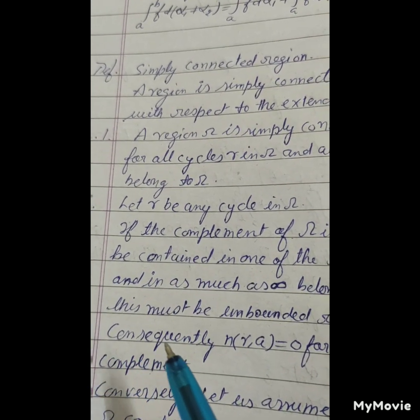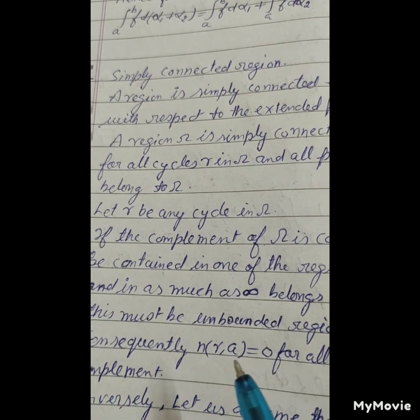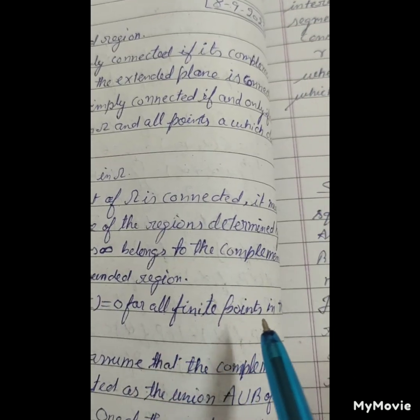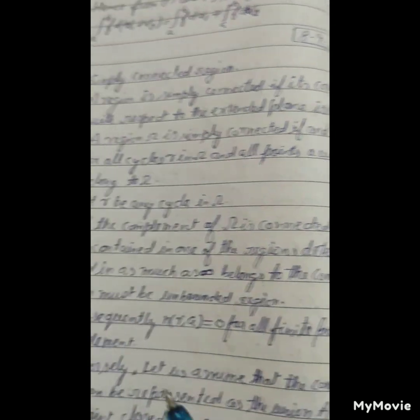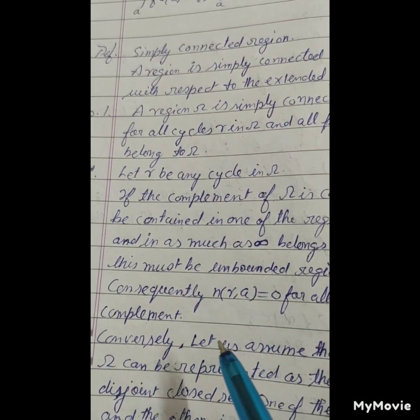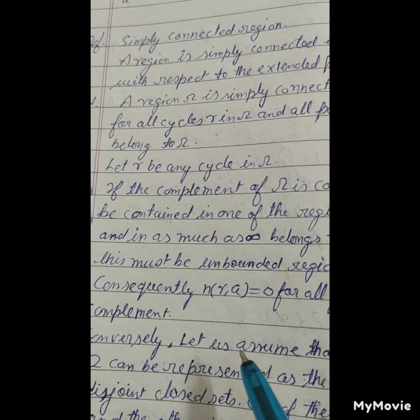And in as much as infinity belongs to the complement, this must be the unbounded region. Consequently, n(gamma) is equal to zero for all finite points in the complement.